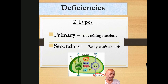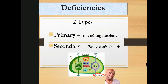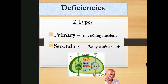Proverbs 25:27 — it's not good to eat too much honey, and it's not good to seek honors for yourself. Sometimes a person who seeks too much glory, too much respect, too much honor — it's not good. You wind up appearing unglorious to others, and we definitely don't want that.